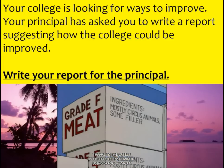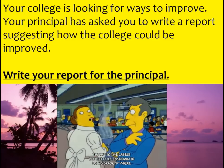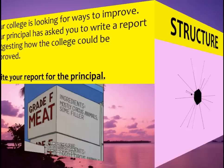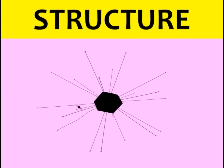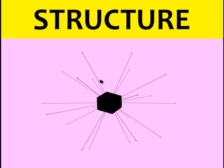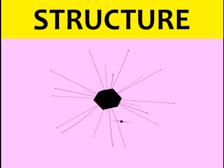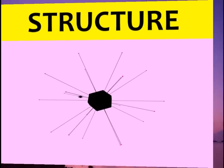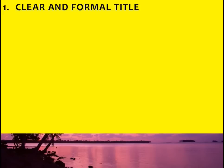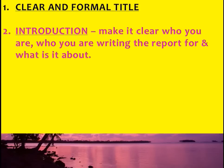We're writing a report to the principal — the person in control of the college or school. So, how are we going to structure a report? Remember: a letter has addresses, a speech might open with 'good afternoon', an article might have catchy headings. For a report, number one: you're going to have a clear and formal title. Unlike a review or article where you'd use alliteration or something catchy, this is almost a business report — so just a clear, simple title.